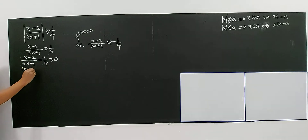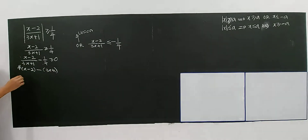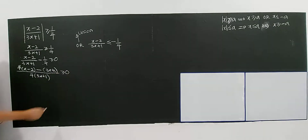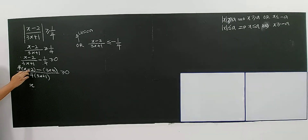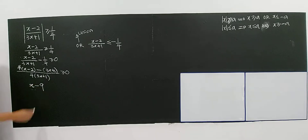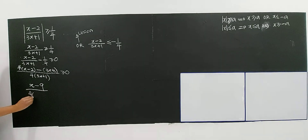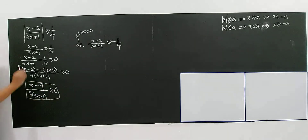After combining, you get (x minus 2) times 4 minus (3x plus 1) over 4(3x plus 1) greater than or equal to 0. So 4x minus 3x gives x, and negative 8 minus 1 gives negative 9. So the rational expression becomes (x minus 9) over 4(3x plus 1) greater than or equal to 0. Make sure the coefficient is positive. This is your Case 1.